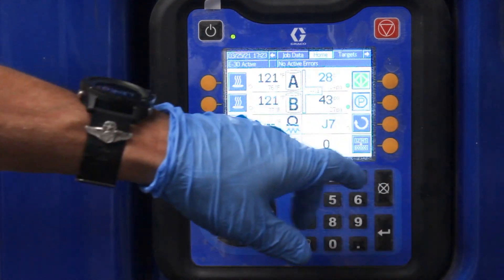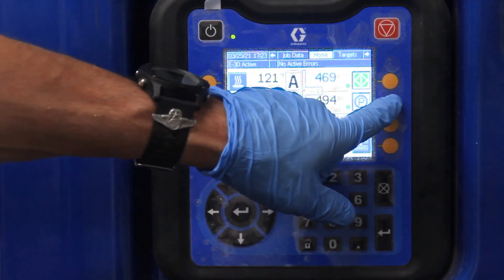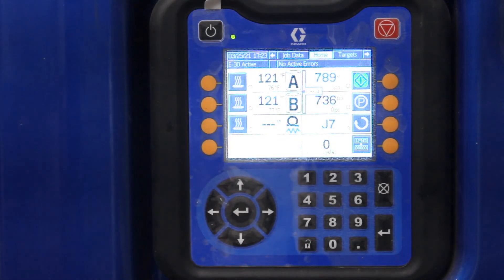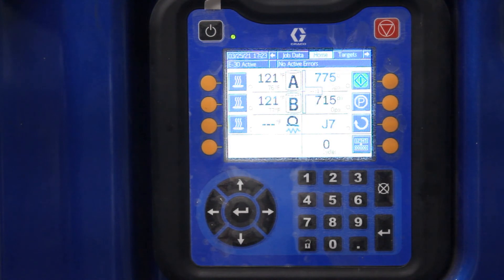The park mode, you push this, it changes color. If you're at, say, 1100 PSI, when you bleed it down to 500, it actually puts the pump on the A side in chemical. So you don't get no crystallization. So that's the park mode.